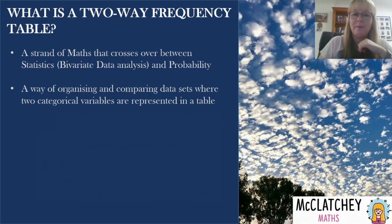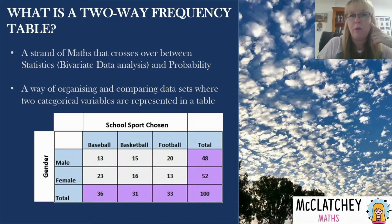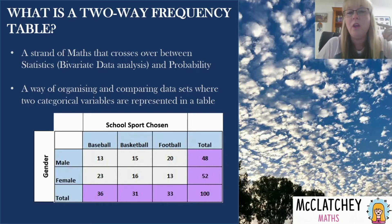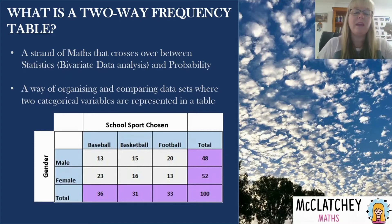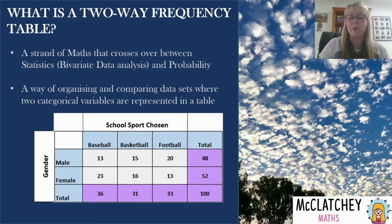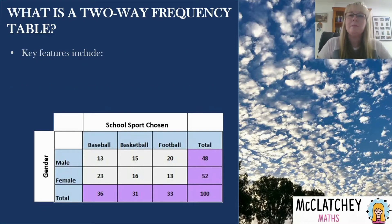Here's an example of a two-way frequency table. You can see there are two different things being looked at: the gender of the participants in a study, as well as the sport they've chosen for school — whether that was baseball, basketball, or football. When they give an answer for gender it's one or the other, and for sport it's one or the other. These are not ones where you can answer in multiple categories.